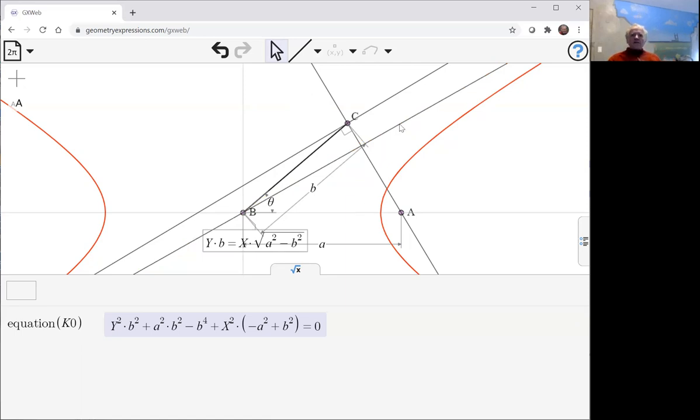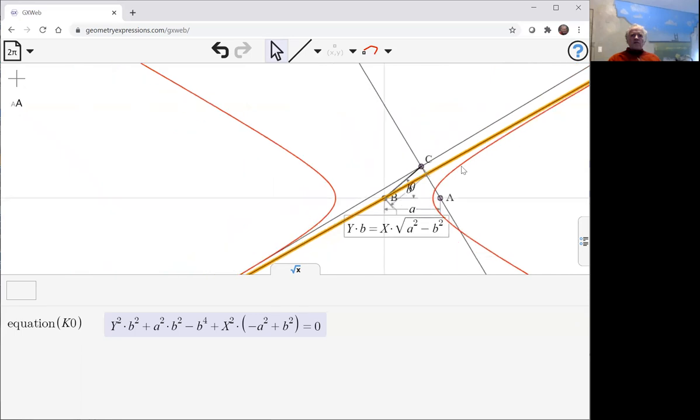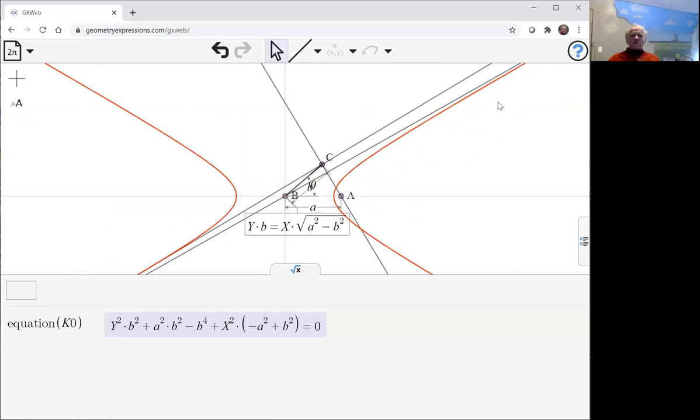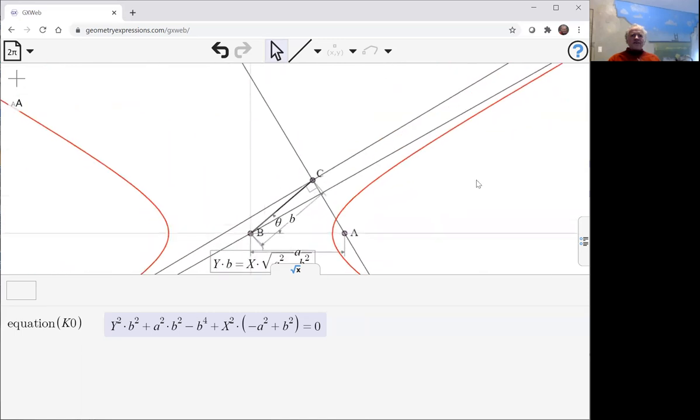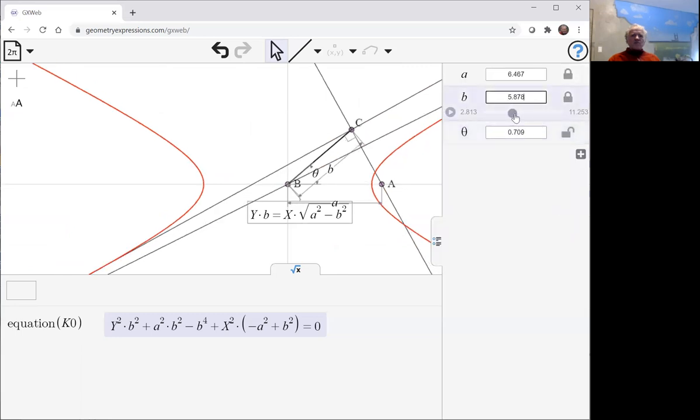And that one might zoom out to see, it does indeed look like it might be the asymptote. We can observe that if we change our parameters,